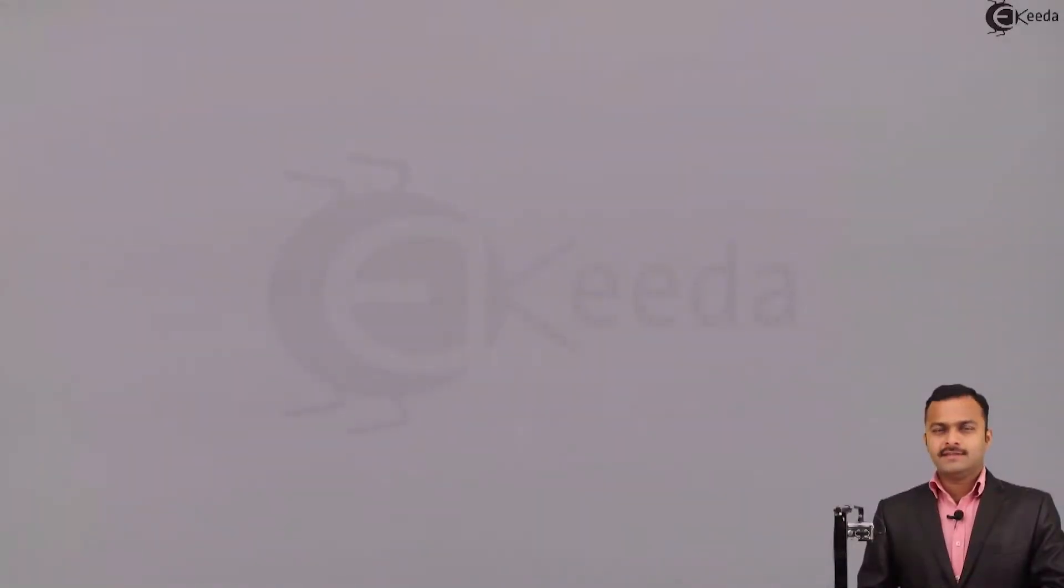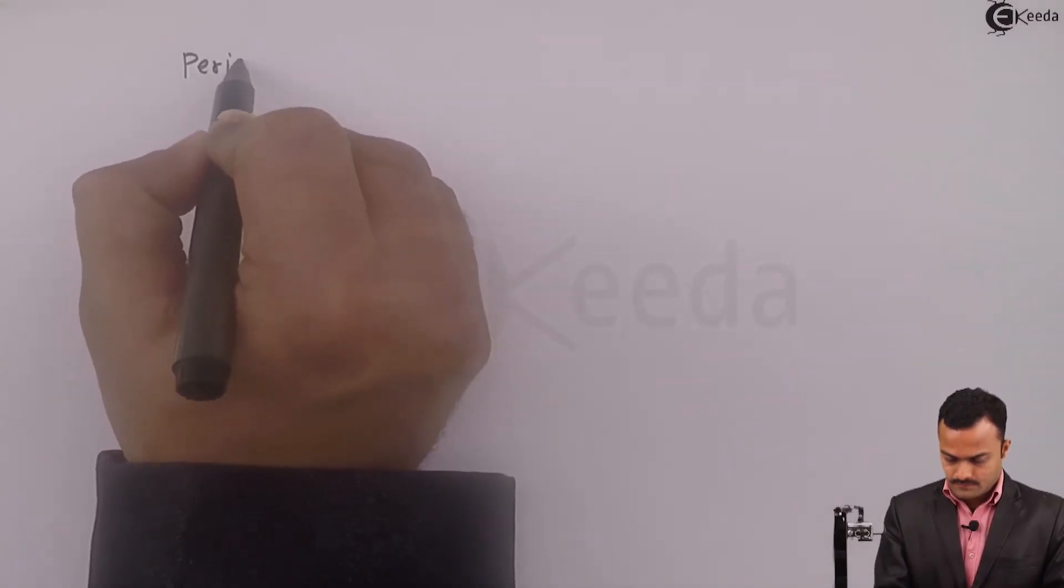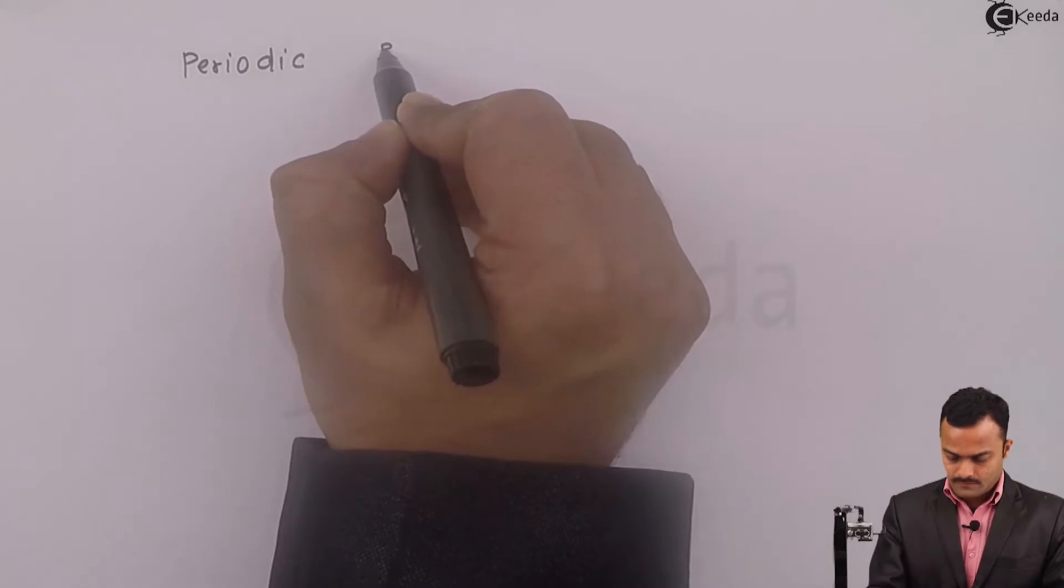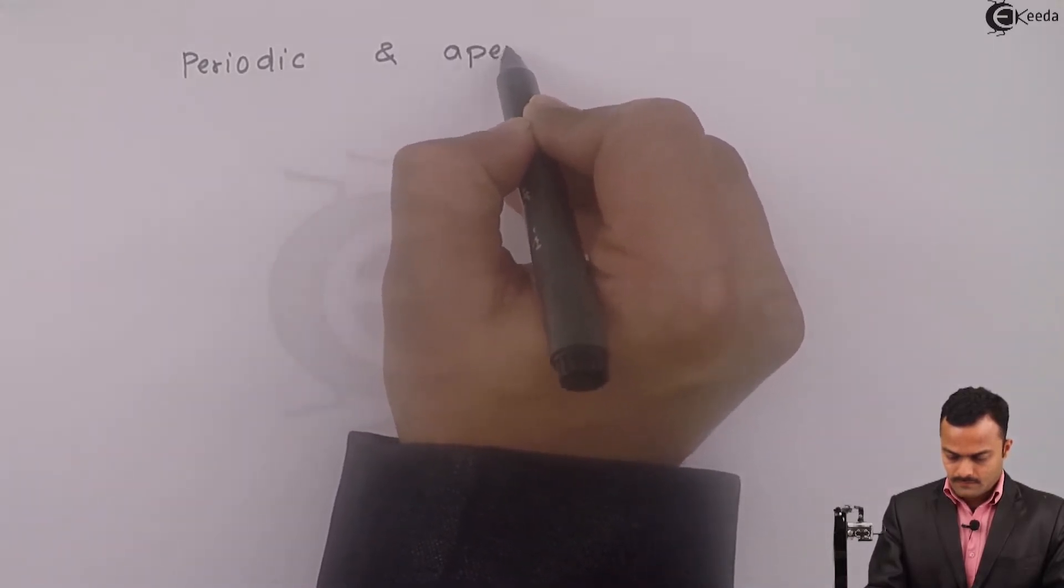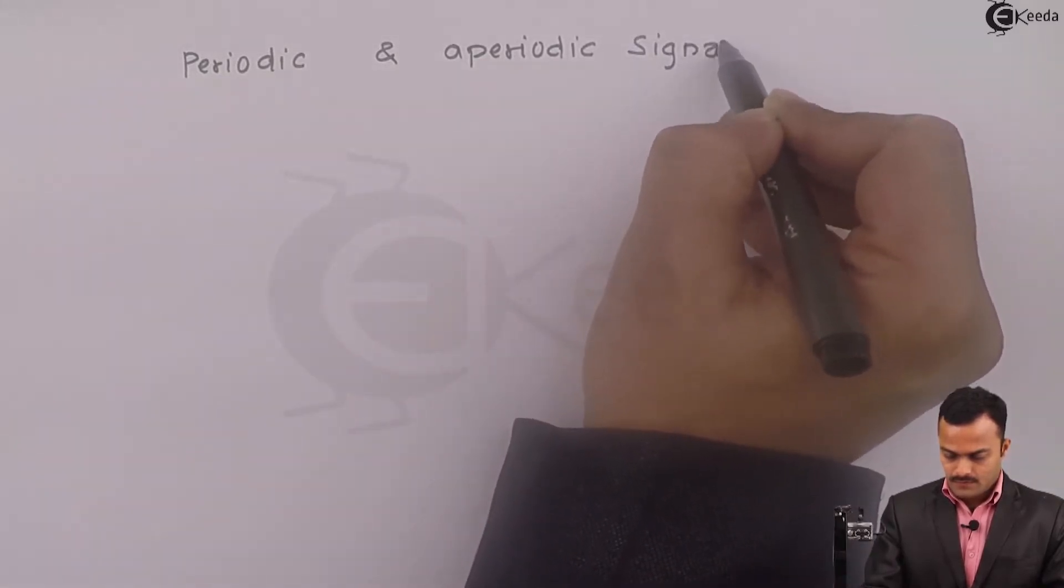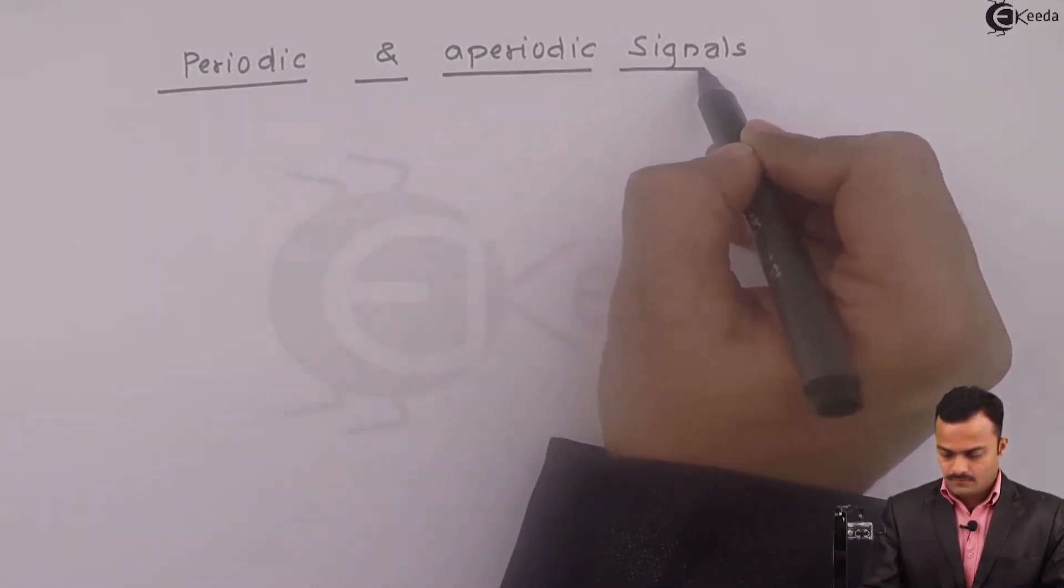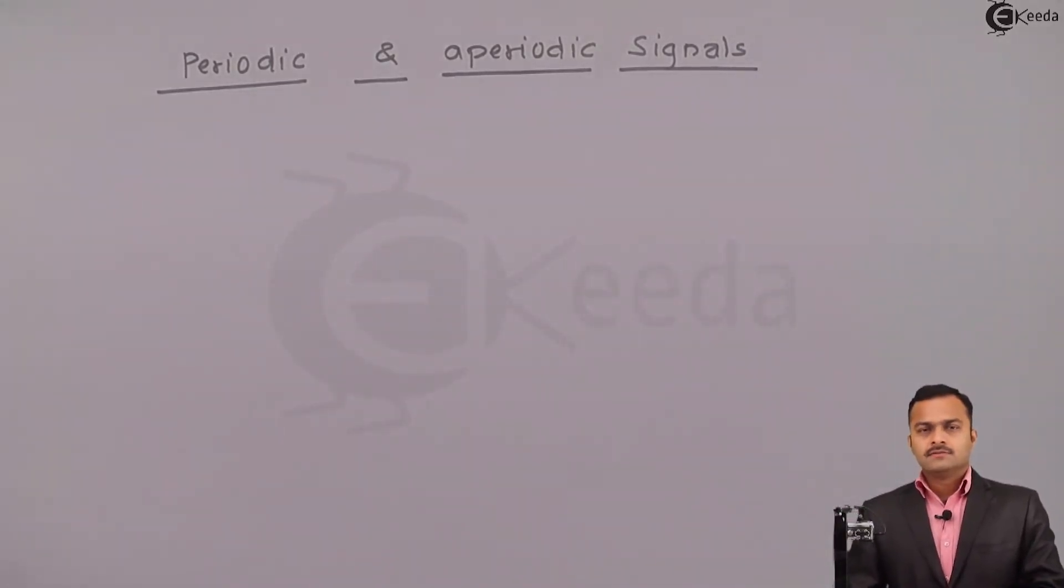Hi friends, in this video we are going to see classification of signals, that is periodic and aperiodic signals. As the name suggests, the signal which will repeat itself after some time interval is called a periodic signal.